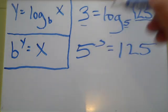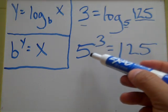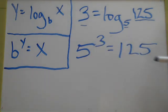And if you plug that into your calculator, you would discover that 5 to the 3rd power is equal to 125. And that is how you express a logarithmic equation exponentially.